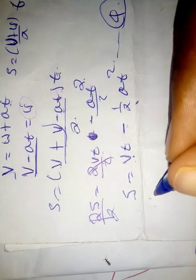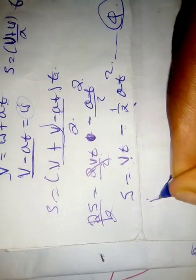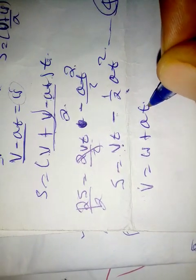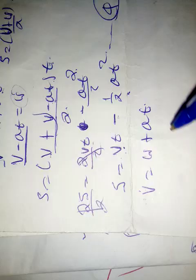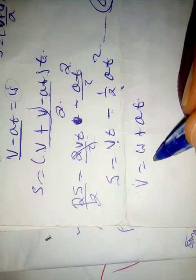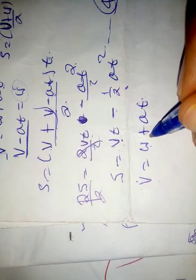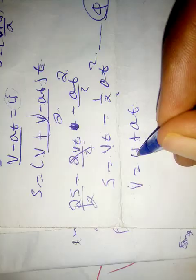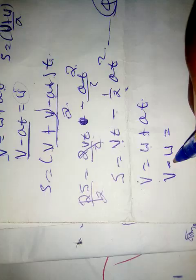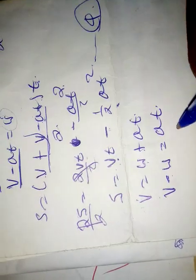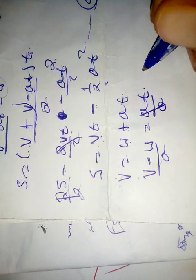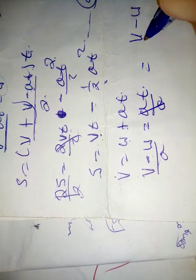V is equal to U plus AT. Another time — now here, in the end, V minus U is equal to AT. If you want to write a letter for the letter, the letter is T equals V minus U over A.